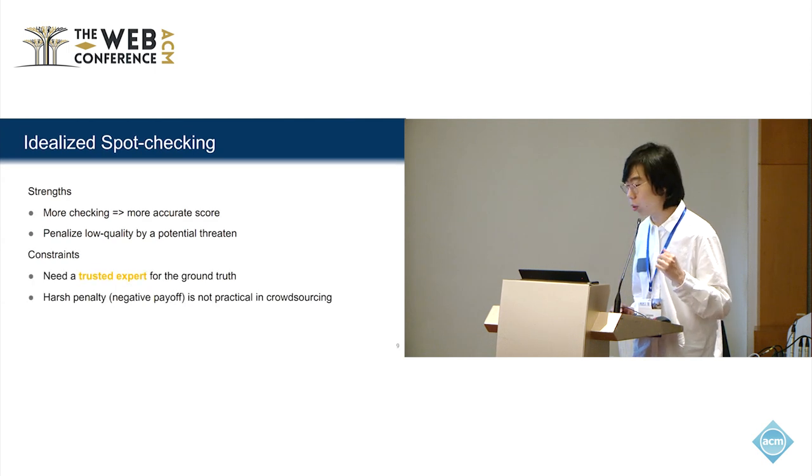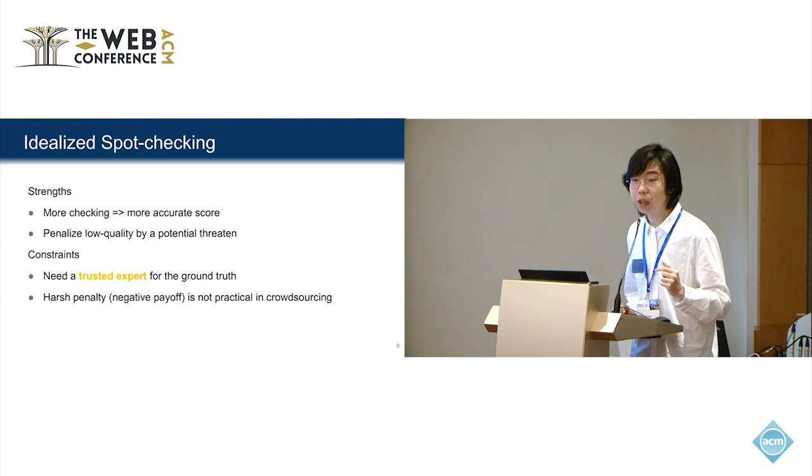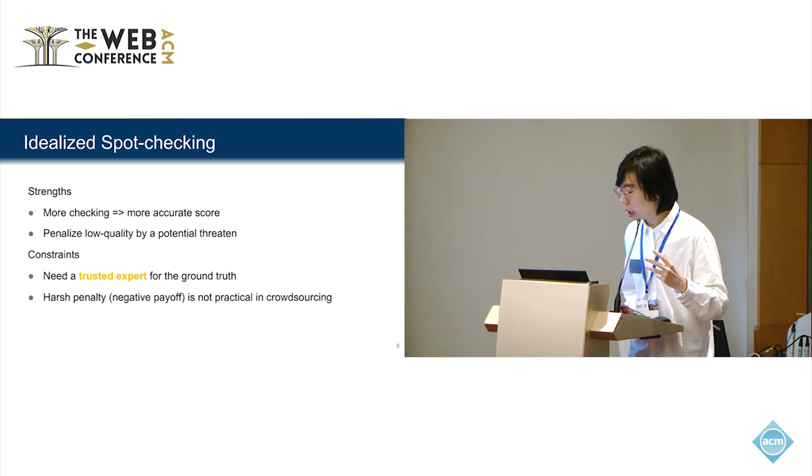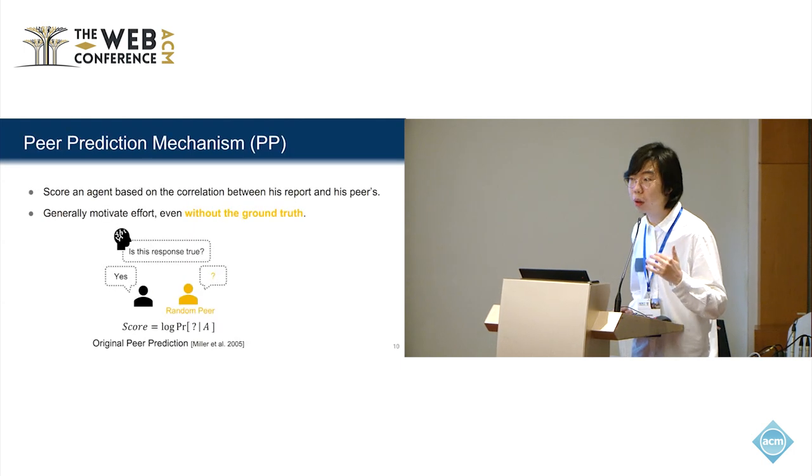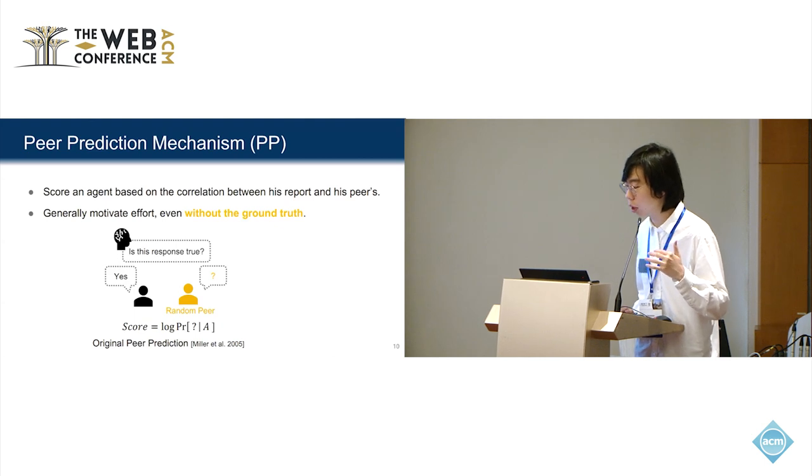But there's two constraints. The first constraint is we need a trusted expert for accessing the ground truth, which could be very expensive in crowdsourcing tasks. Additionally, harsh penalty is not practical in crowdsourcing applications, because we can't apply a negative payment to the crowdsource workers.